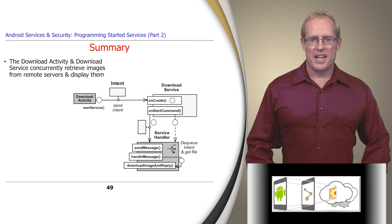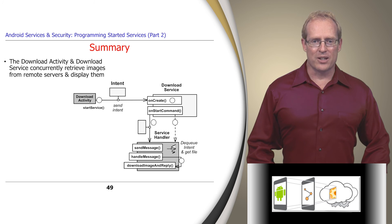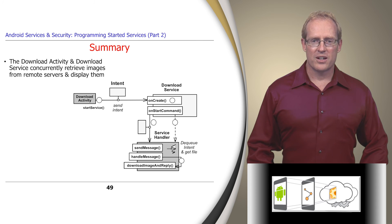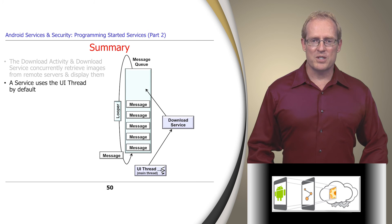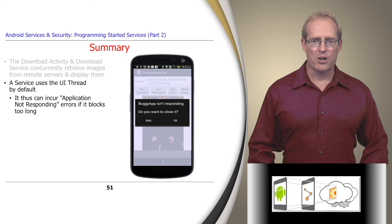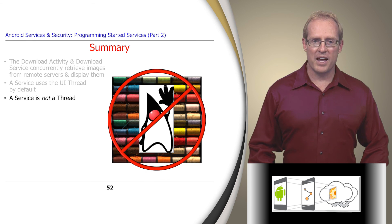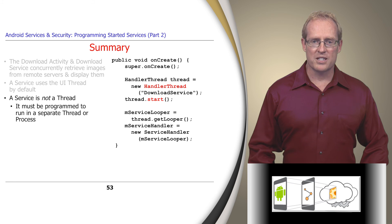In summary, this part of the module analyzed the implementation of the download activity and download service, which are used to retrieve images from remote servers, store them in files on the device, and display the images to the user. By default, a service uses the user interface thread and can thus incur Application Not Responding errors if it blocks too long. A service is not a thread and does not create or run in a separate thread or process unless explicitly programmed to do so.